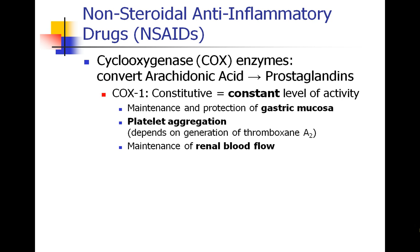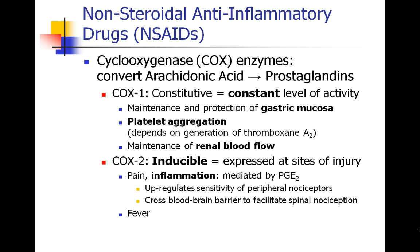Those are three body functions facilitated by the COX-1 enzyme, which is constant in your body. The COX-2 enzyme is called inducible, meaning it only gets to work at specific times — when there's an injury, and really only at the sites of injury. Pain and inflammation, mediated by a prostaglandin called PGE2, occur when COX-2 starts working. COX-2 makes your peripheral nociceptors — your pain receptors — work more sensitively, and it can cross the blood-brain barrier to also make you feel more pain via spinal cord receptors.